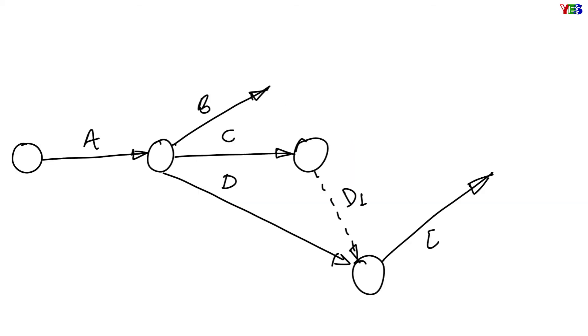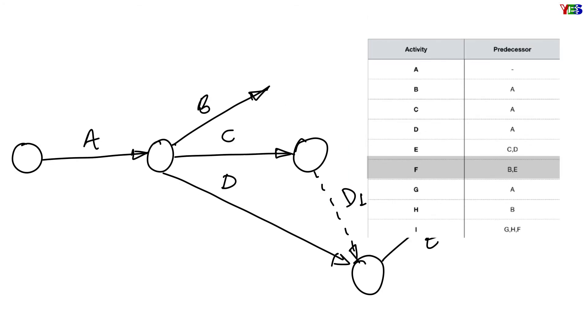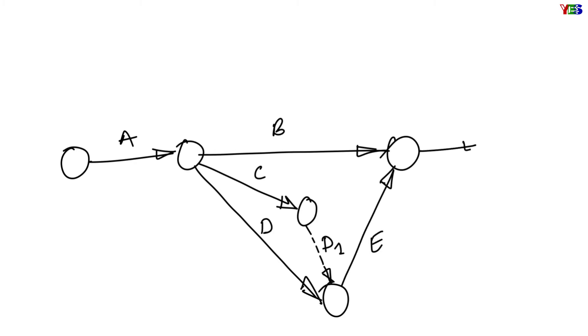In this example, activity C. Next, activity F we have after completion of B and E simultaneously, so we will make a head event for activity B and E. Here we can make same head event since their tail events are different.